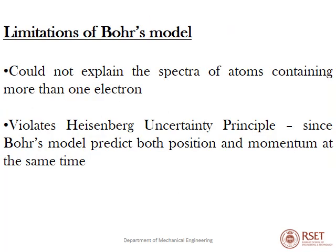There are some limitations to the Bohr model: it could not explain the spectra of atoms containing more than one electron — it works clearly for hydrogen but not for heavier atoms. It also violates Heisenberg's uncertainty principle, since the Bohr model predicts both position and momentum at the same time, which is not actually possible by Heisenberg's principle.